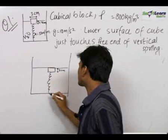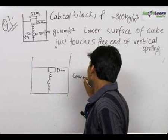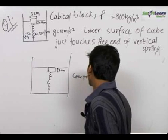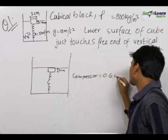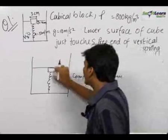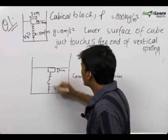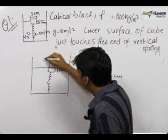There is some compression of the spring, the compression in the spring will be equal to 0.6 cm because this block went down by 0.6 cm. So the force acting in the upper direction on the object will be equal to 50 into 0.6 upon 100, kx, that is equal to 0.3 newtons, this is kx.